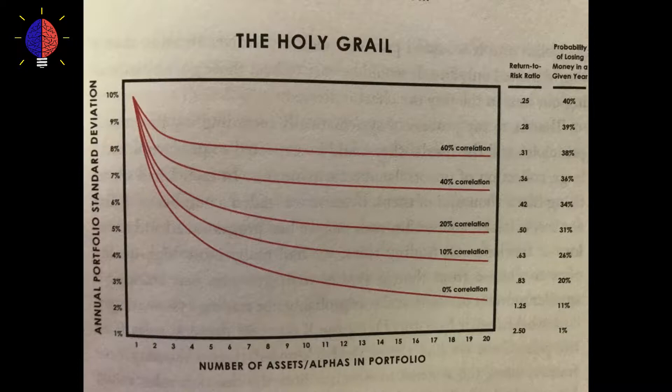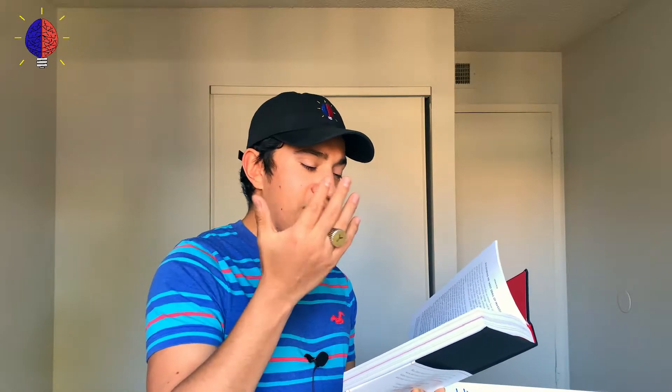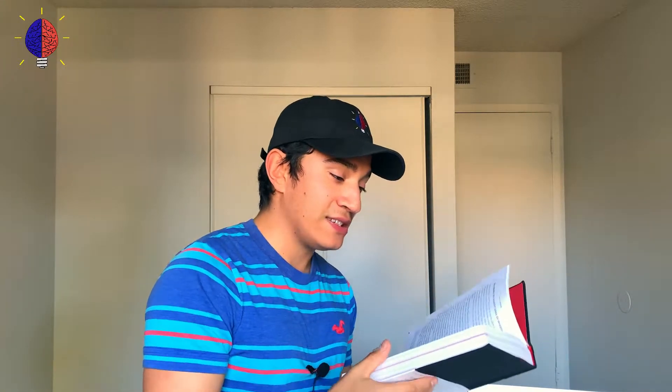At the bottom we see the number of assets or alphas in the portfolio — your investments, pretty much like stocks, gold, real estate, and different things like that. On the right-hand side within the graph we see 60% correlation, 40% correlation, 20%, 10%, and 0% correlation. Correlation — when I first heard about it I did not understand — but you can think of it as a relationship: it's a relationship between two given assets. On the right-hand side we also see return-to-risk ratio and the probability of losing money within a given year. The really big key takeaway with the holy grail of investing is to find assets that have as low correlation as possible — in other words, that have very low relationships between each other.